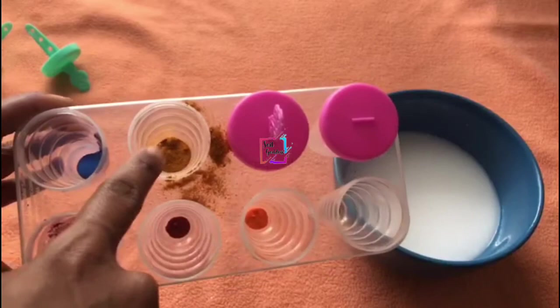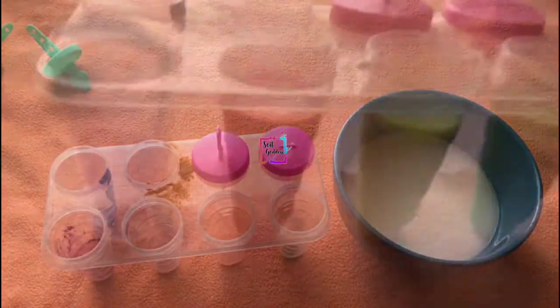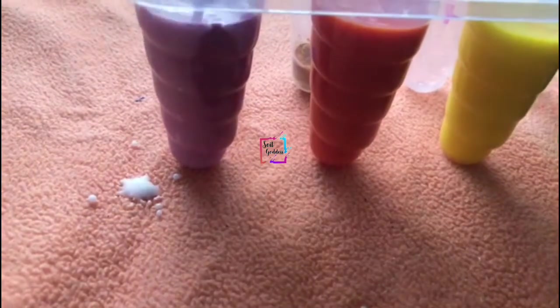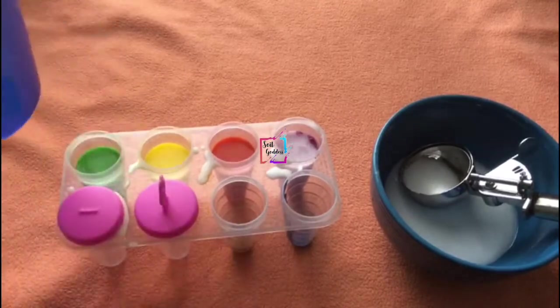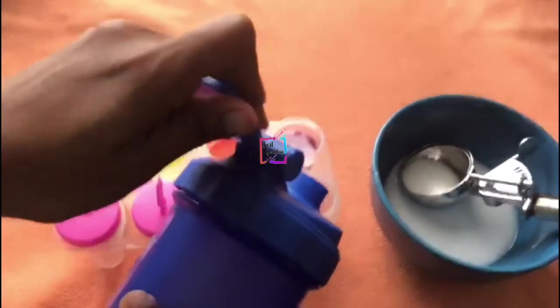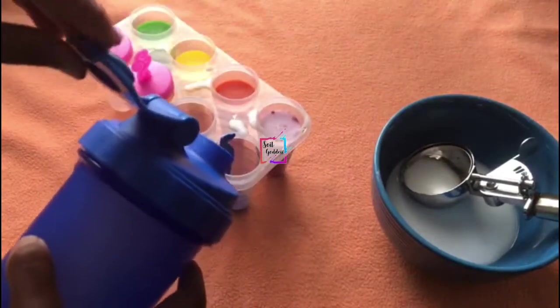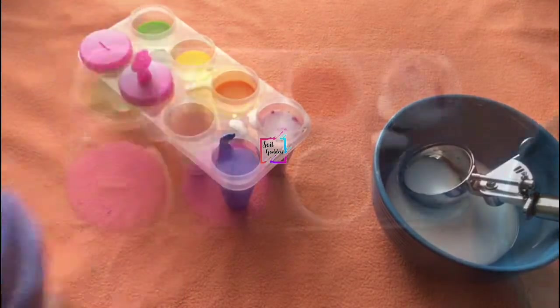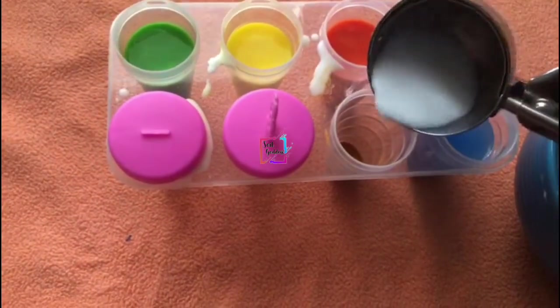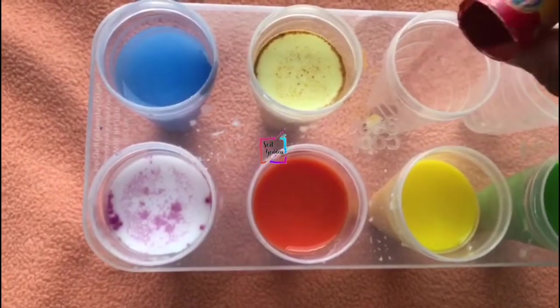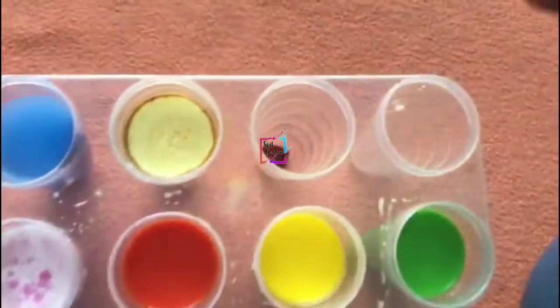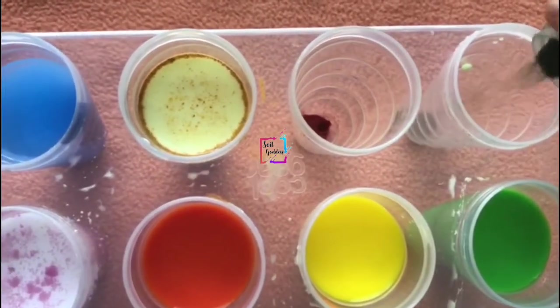You can use anything available at your home. Why we are using this white liquid instead of normal plain water is we will get a vibrant and bright color when we use this white liquid. If we are using just normal water, it is not going to be that vibrant and it is going to be a little transparent. I don't want my paint to be transparent, and that's the reason I am making my pop paints with this white liquid as the base.